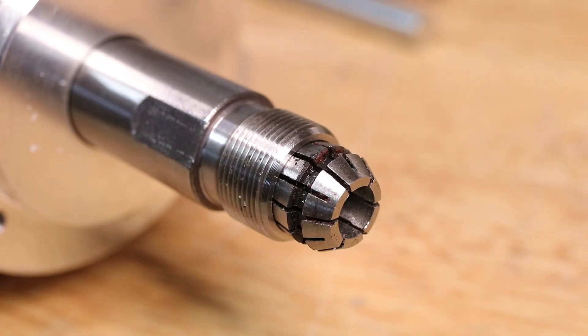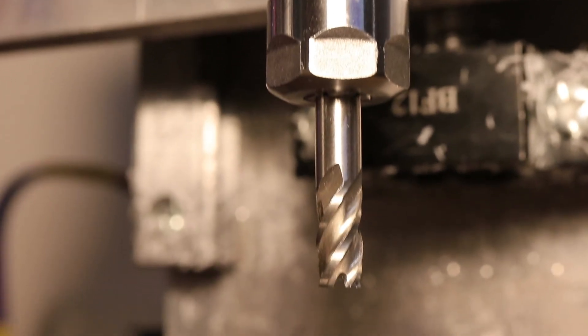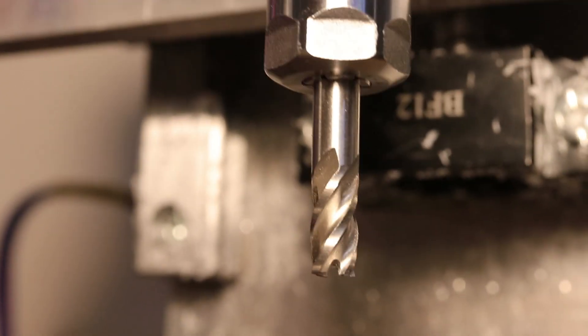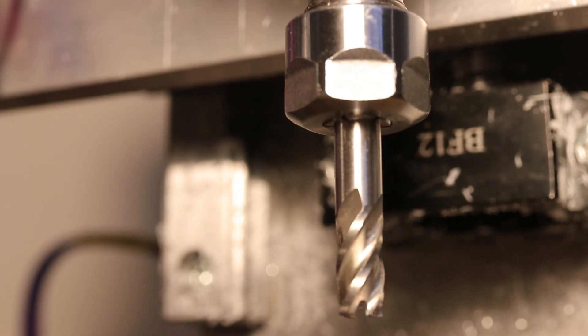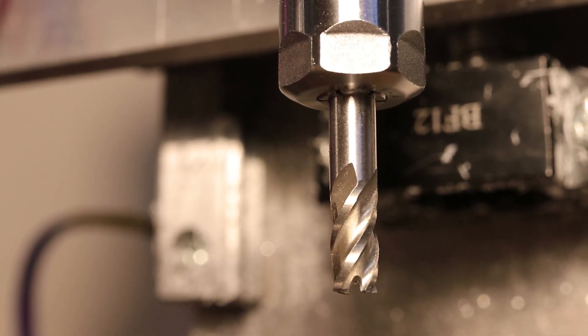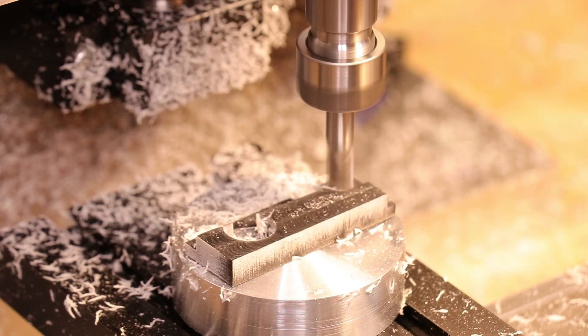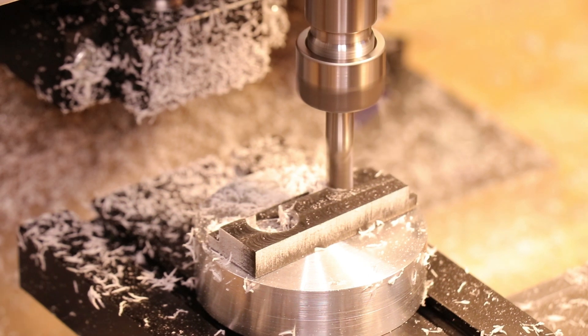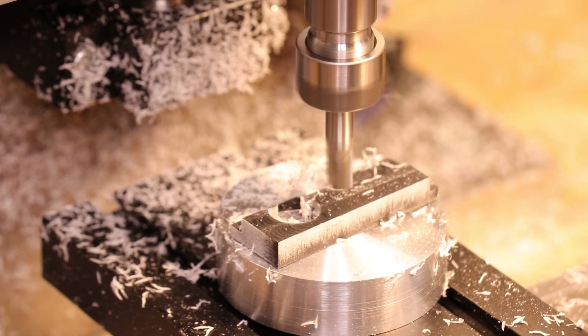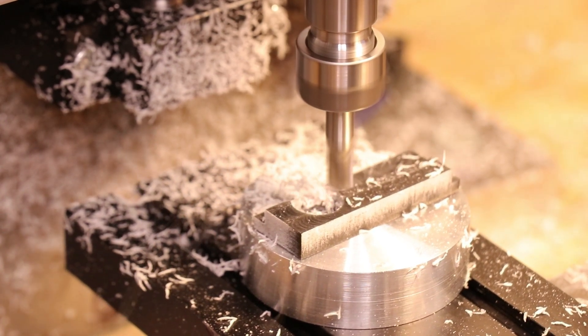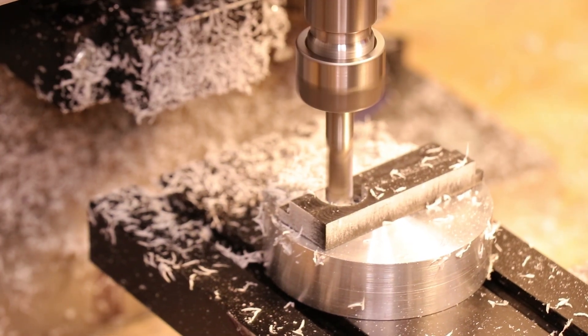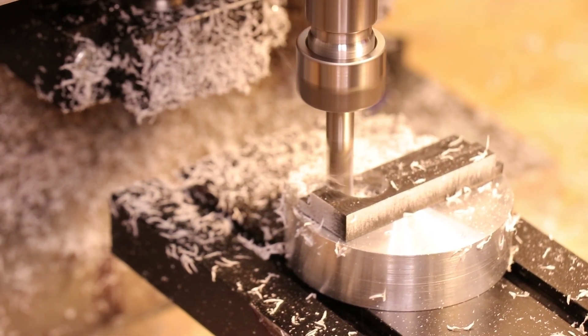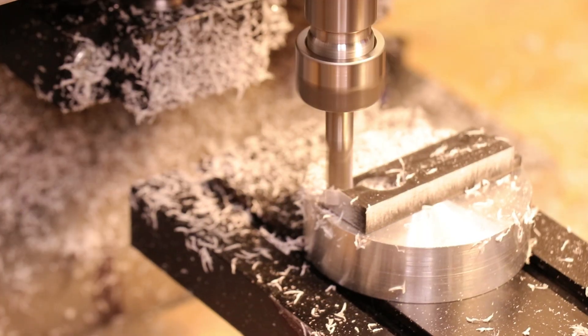These ER11 collets which are on the smaller side of collet sizes are the same collets that I use in my mill spindle and since I own quite a few to be able to use different end mills I thought I might as well reuse them in the collet chuck. Although if I wanted to hold parts larger than seven millimeters in diameter I could simply make a chuck for the bigger collet size.